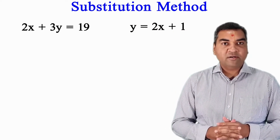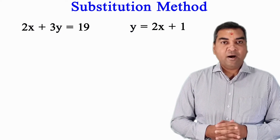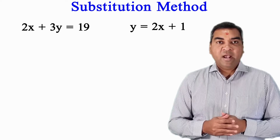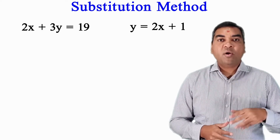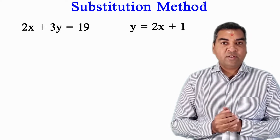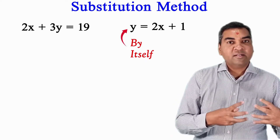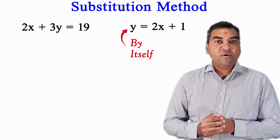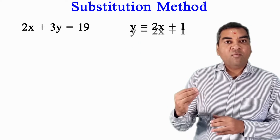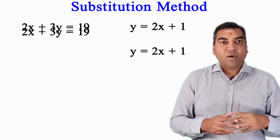So let's get started. I have two equations: the first one is 2x plus 3y equal to 19, and the second is y equal to 2x plus 1. I want to solve this by substitution method — meaning, getting the value of x and y. Rule number one: in one of the equations, either your x or y needs to be by itself. Here, y is by itself in the second equation: y equal to 2x plus 1.